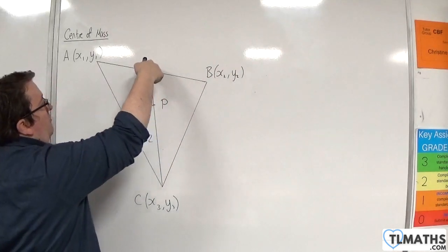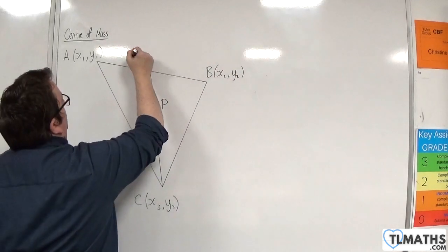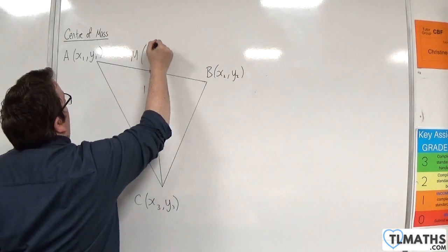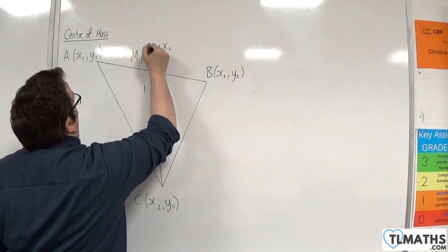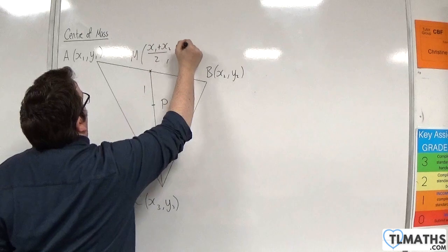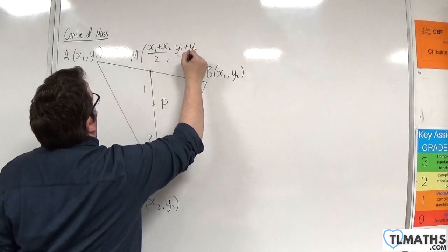Now, the coordinates of my midpoint, so let's call that point M, would be X1 plus X2 over 2, Y1 plus Y2 over 2.